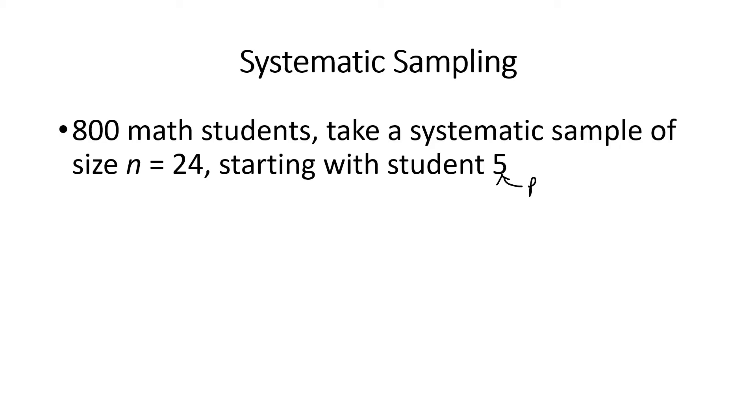The first thing we have to do here is figure out our value of k, that is our step size. For that we take our population size 800 and divide that by our sample size 24. Now that works out to be 33.33, and we always round that value down to the previous whole number, so here our step size is going to be 33.